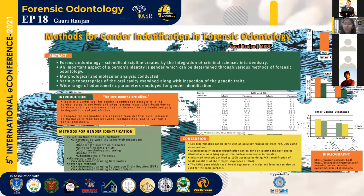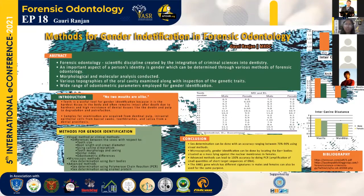As we all know, forensic odontology is a scientific discipline that has been created by the integration of criminal sciences into dentistry. Since gender is an important aspect of a person's identity, there are various methods in forensic dentistry that can be used to determine the same. No two mouths are alike — this concept is extremely similar in nature to the unique existence of fingerprints.